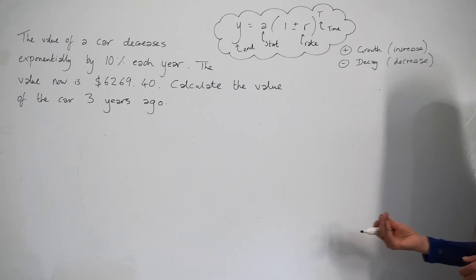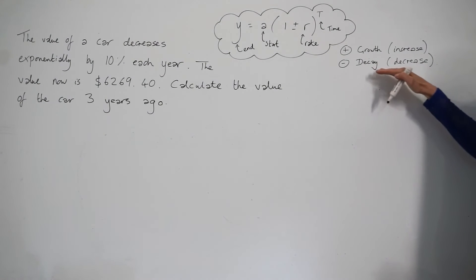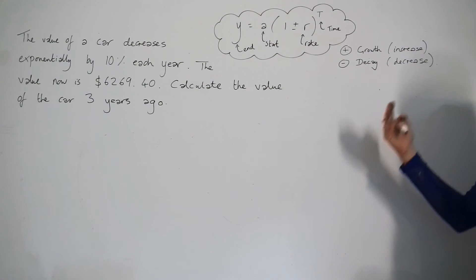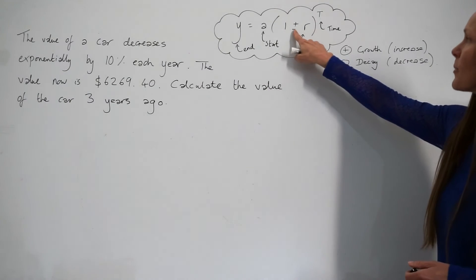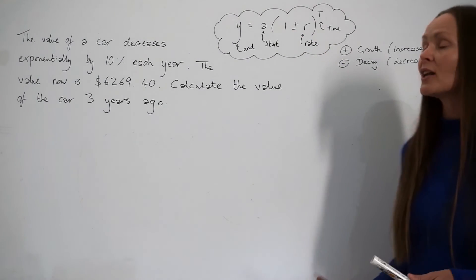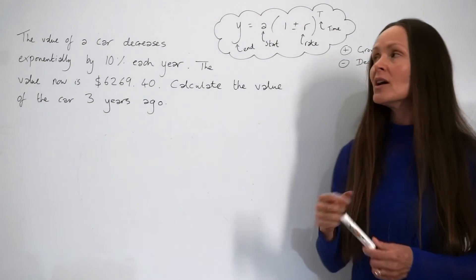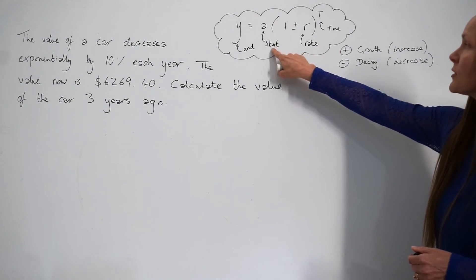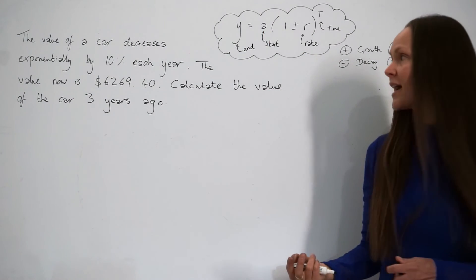So in this question, it's decreasing exponentially. So that's an example of exponential decay. So you have to remember to subtract inside the brackets here. And this time, the question says to calculate the value of the car three years ago. So we're trying to work out the start value a instead.